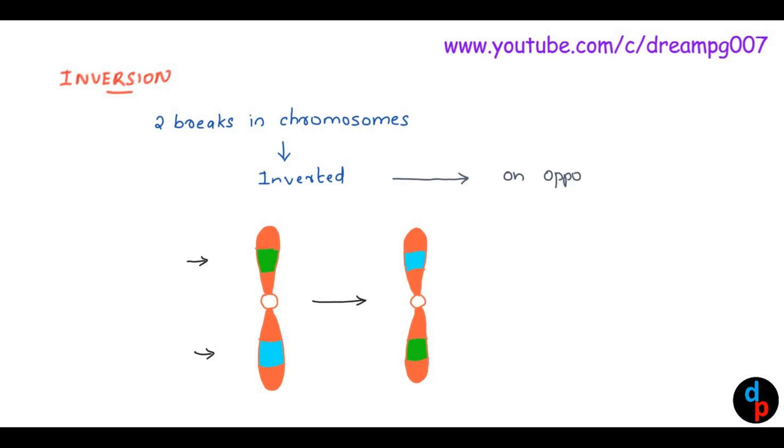If this inversion happens on the opposite side of the centromere, it is called pericentric inversion. And if this inversion happens on the same side of the centromere, it is called paracentric inversion.